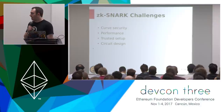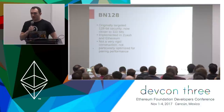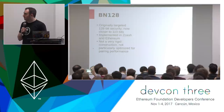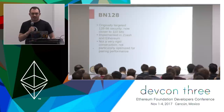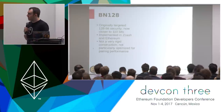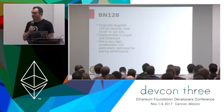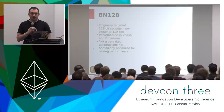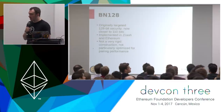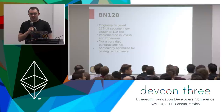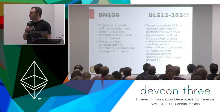On curve security: there's a pairing-friendly elliptic curve implemented in Zcash, designed by our scientists, and it was just implemented in Ethereum as well. It originally targeted 128-bit security. However, due to some optimizations to the number field sieve algorithm, this has weakened a little bit — it's about 110 bits now.